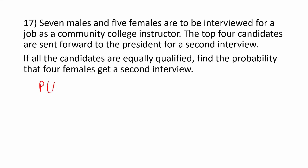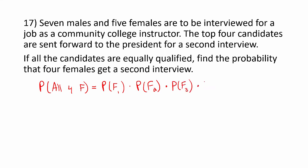So we're looking for the probability that all four are female, and there's only one way that can happen: the first is female, and the second is female, and the third is female, and the fourth is female. These are dependent probabilities, so the probability is going to change from person one to person two and so on.